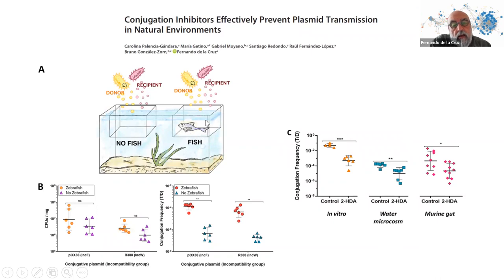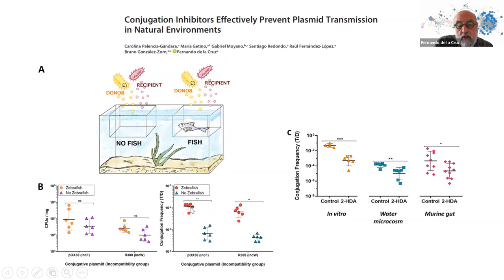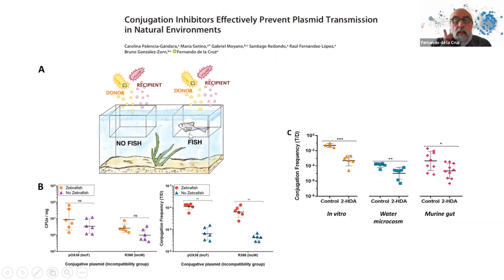For example, you feed fish with food containing donor and recipient bacteria, and you analyze the conjugation frequency inside the fish or in the surrounding water. What you find is that conjugation frequency is much higher when fish are present — going up one to two logs — meaning that conjugation within the gut of the fish is more efficient than in dispersed liquid in a fish bowl.